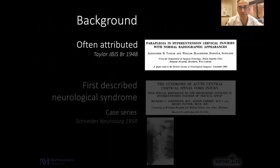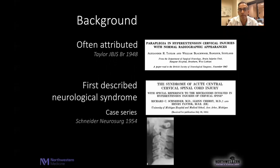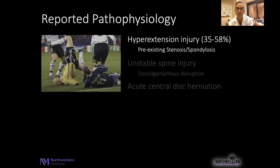As a bit of background, when we talk about central cord injuries, these are often attributed to classic papers from the 1940s and 1950s describing paraplegia in the setting of normal radiographs, or describing, in the Schneider case, the first described neurological syndrome documented as central cord injuries. However, it's interesting that even in the Schneider paper, these included patients with more traditional instability patterns — distractions or translational injuries — as opposed to just individuals with hyperextension injuries in the setting of spondylosis.